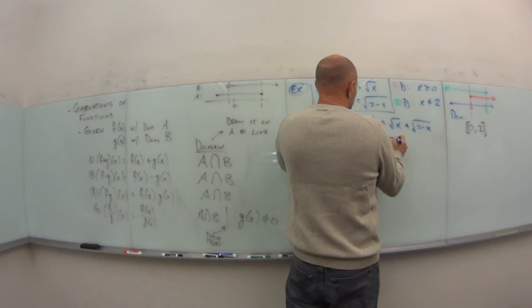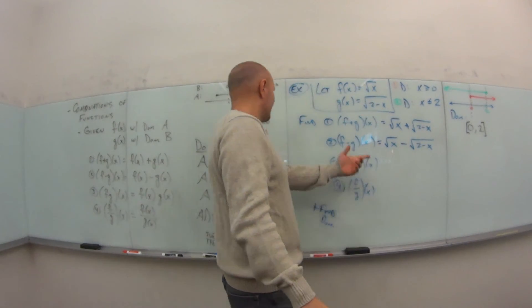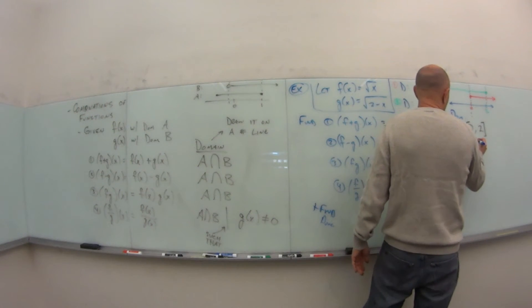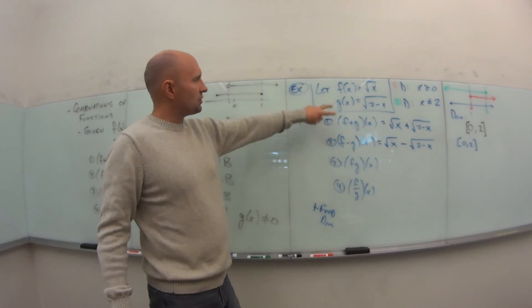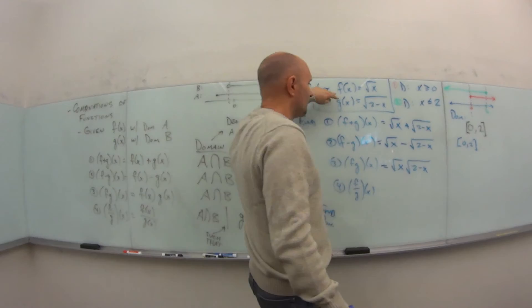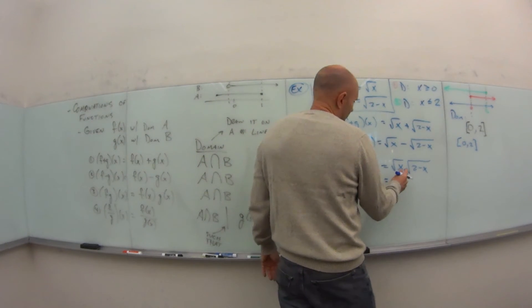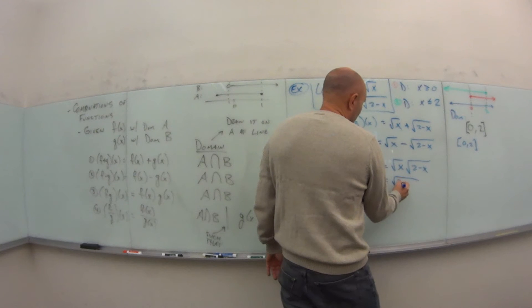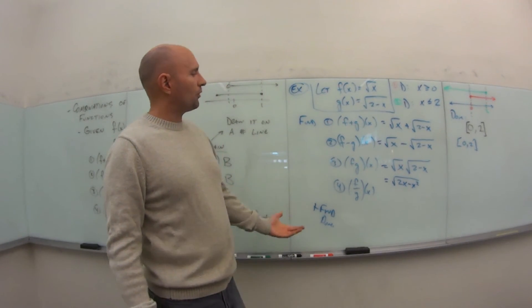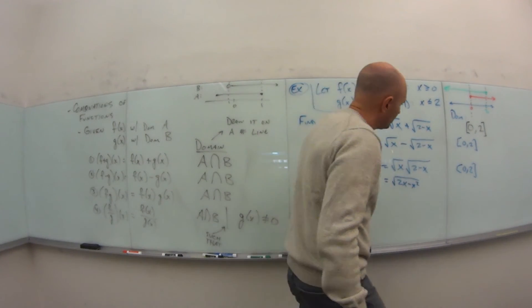For subtraction, I'm just subtracting these two. So f of x, which is square root of x minus square root of 2 minus x. And it has the same domain, it's the intersection. The only one we have to be careful about is the division. So this is 0 to 2. For the multiplication, we just multiply these two together. So square root of x times square root of 2 minus x. And again, I'm not going to get crazy about trying to multiply everything in between. If your instructor does, as long as they have the same roots, you can just multiply what's underneath. So I guess you could simplify this to 2x minus x squared. You just multiply those two pieces together. What's my domain? Well, it's still this intersection 0 to 2 with the brackets.